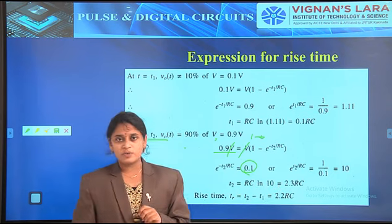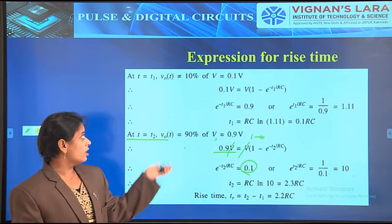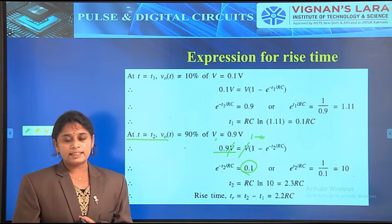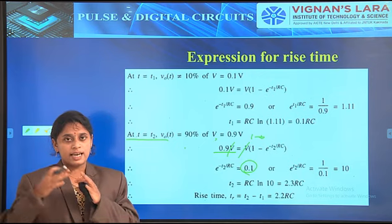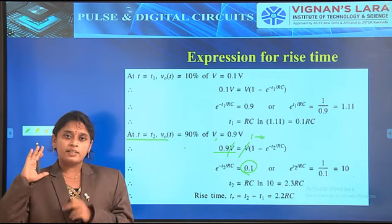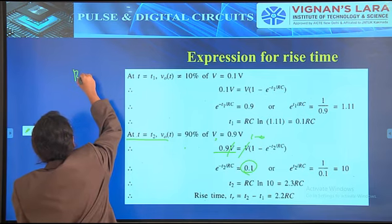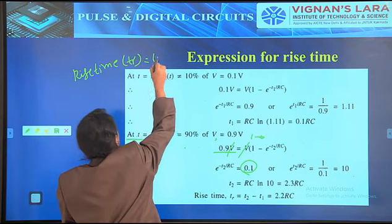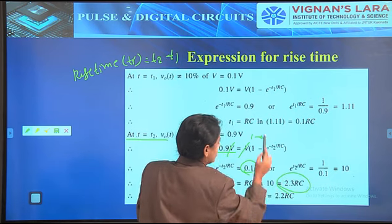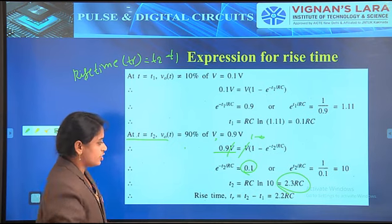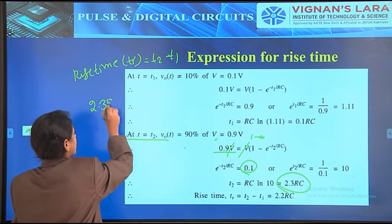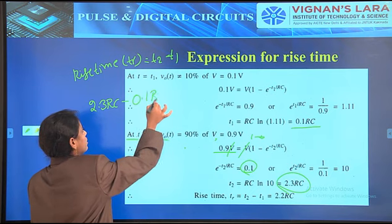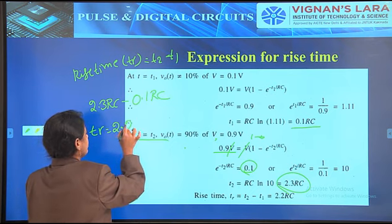Now, what is the equation for rise time? Rise time is the time taken by a waveform to reach from 10 percent to 90 percent. At T equal to T2, the waveform is at 90 percent; at T equal to T1, it is at 10 percent. Rise time TR equals T2 minus T1. Substituting, T2 is 2.3RC and T1 is 0.1RC, so the final value is TR equals 2.2RC.